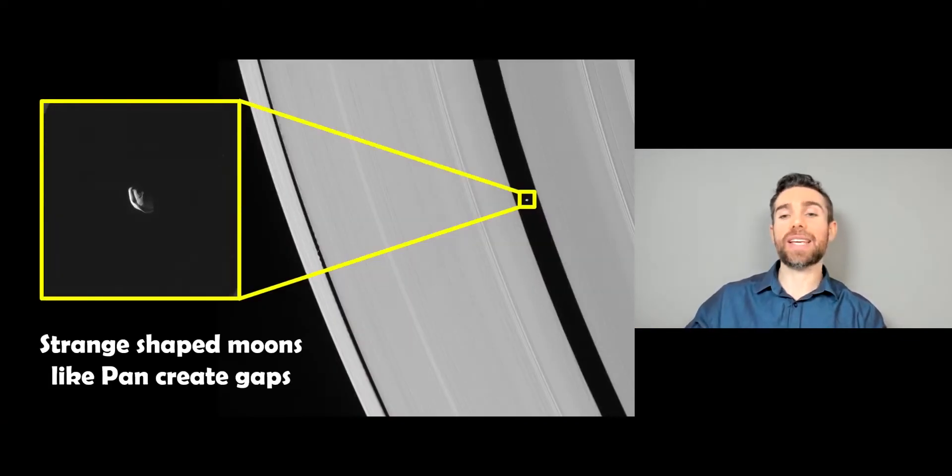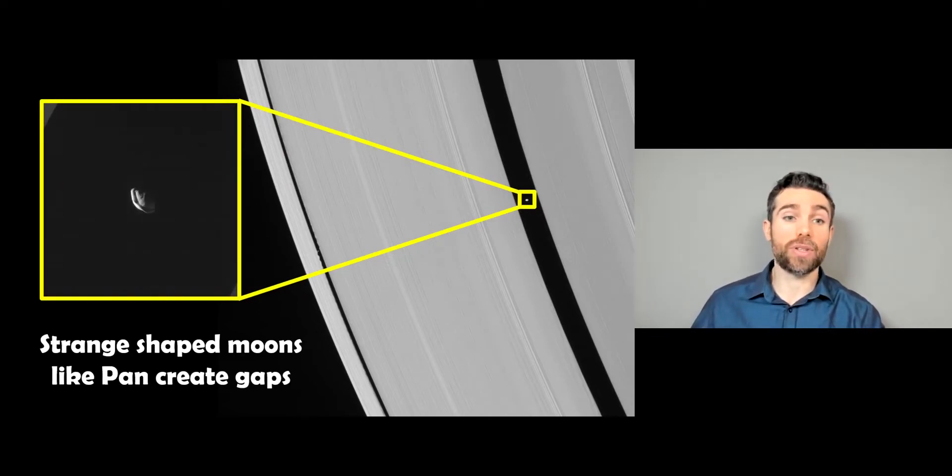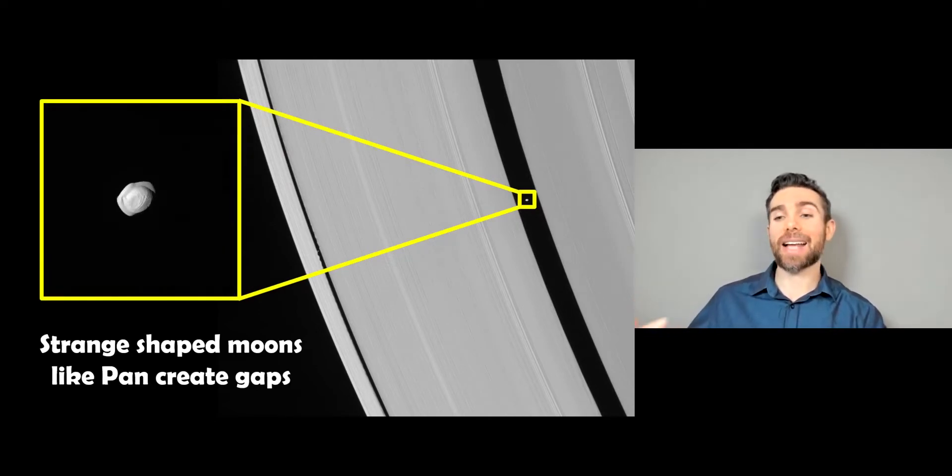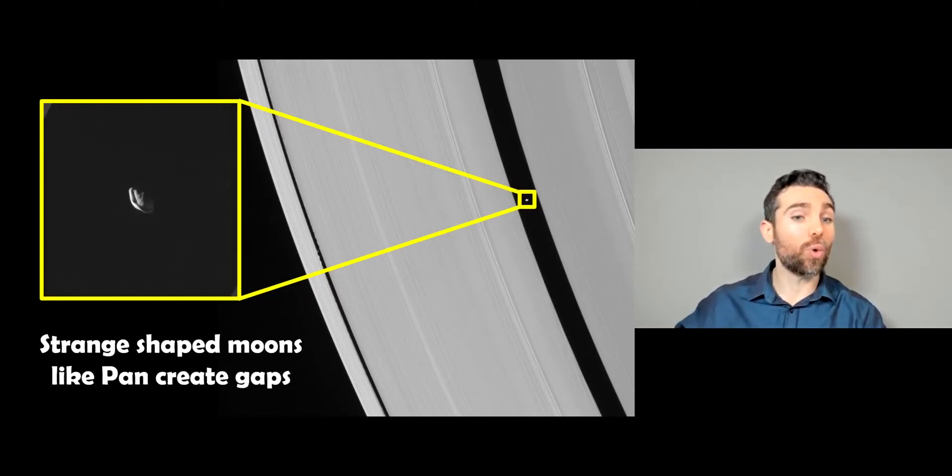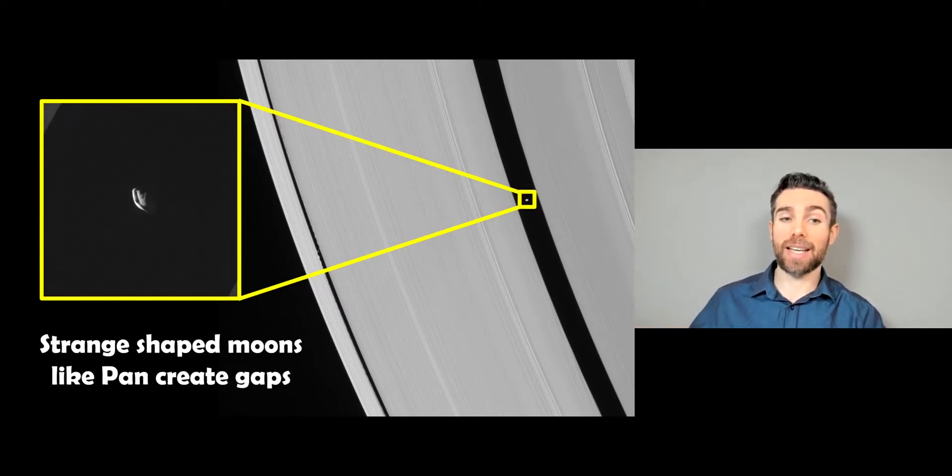Moons inside the rings are not particularly rare. There are a few examples, and the bigger ones, like this one here which is Pan, actually create a gap that goes all the way around the rings. And we can use the size of that gap to actually get the mass of it.